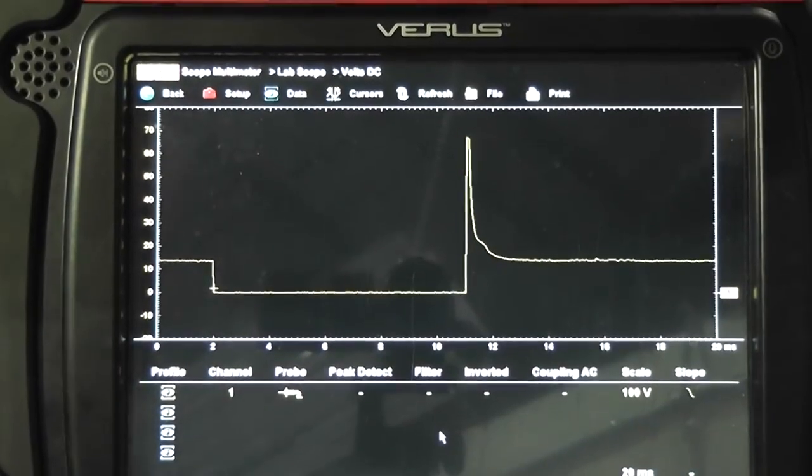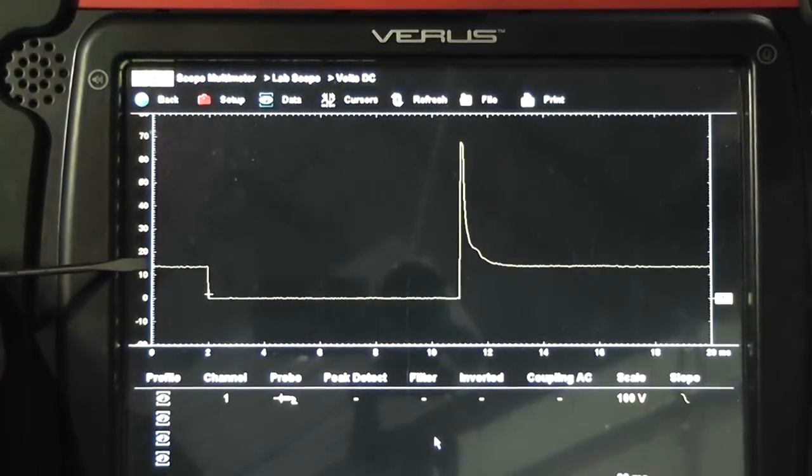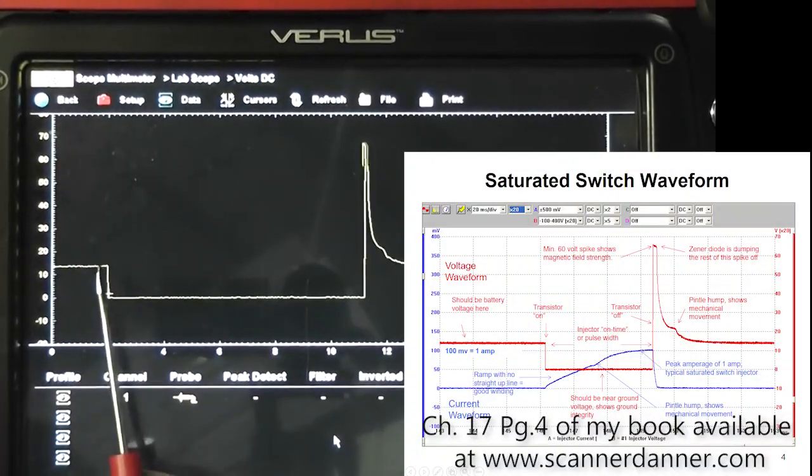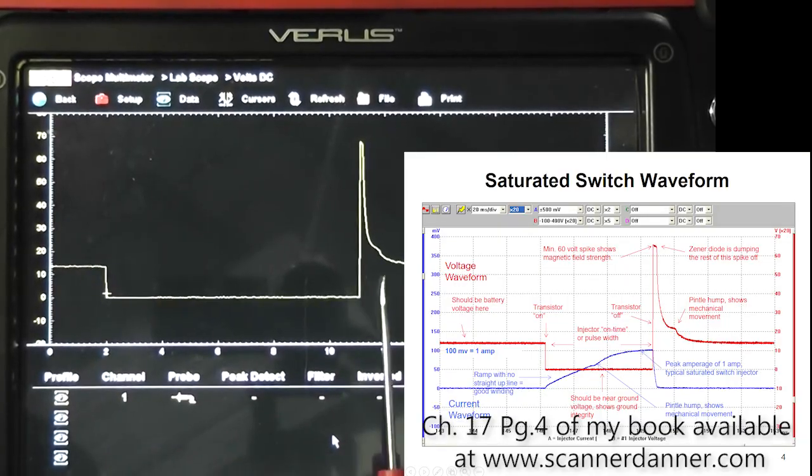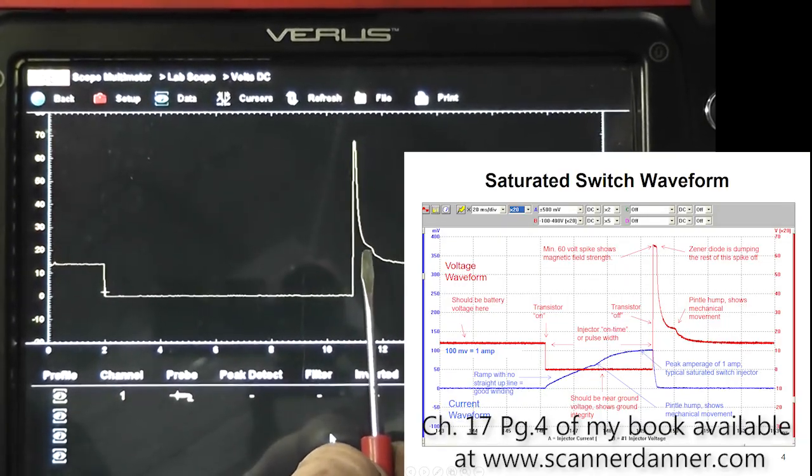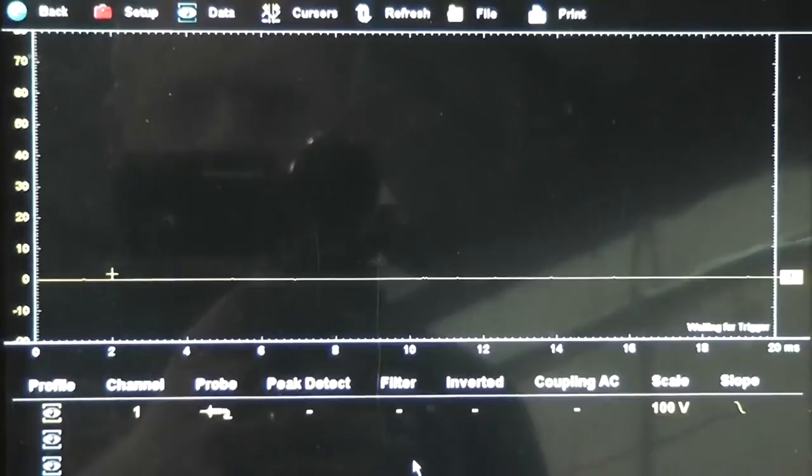This is the number one injector voltage waveform. You see right here, this is battery voltage, about 14 volts, nice clean line to ground. This will be your injector on time from here to here. Then your voltage spike over 60 volts. That's great. And a little mechanical movement known as your pintle hump. This is a good looking injector waveform.